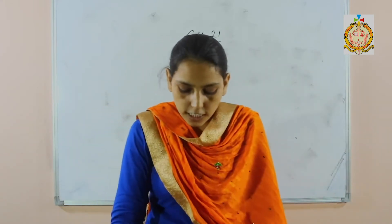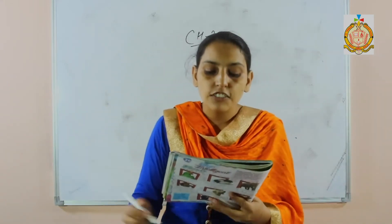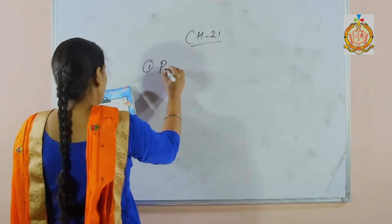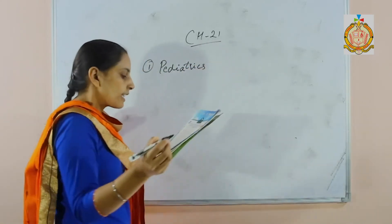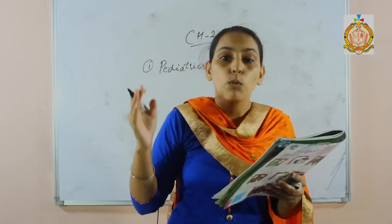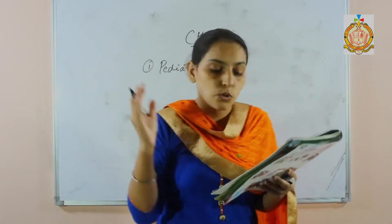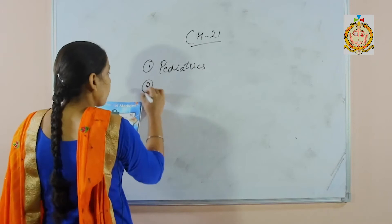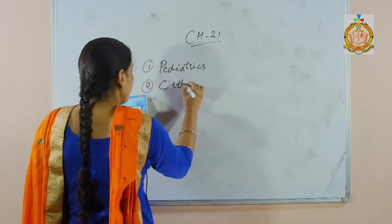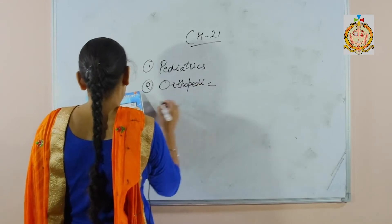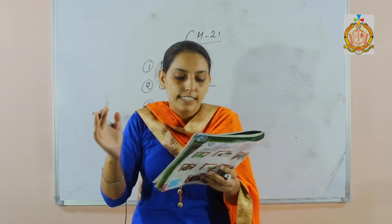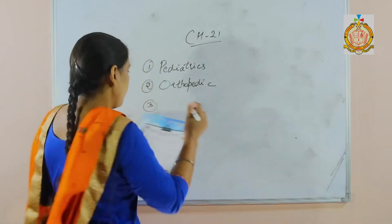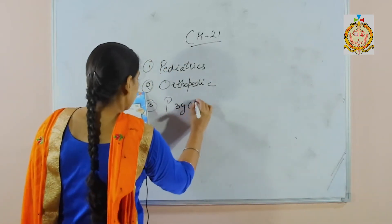We are going to discuss the branches of medicine. First one is care of infections in children and adolescents — that is pediatrics. Next, study of bones and diseases — that is called orthopedics. Next, study and treatment of mental disorders — that is psychiatry.